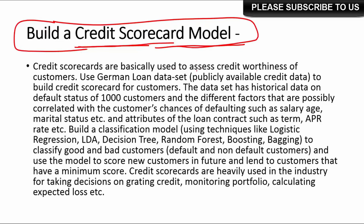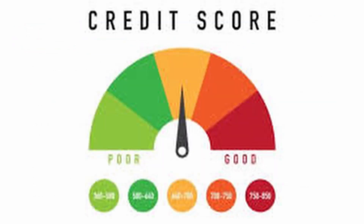Credit scorecards are basically used to assess the creditworthiness of customers. Banks and financial services companies use them to find out who could be a good or bad customer, and based on that they grant loans — only to potentially good customers. They also use them for pricing; customers likely to default are priced at a much higher rate. A number of classification techniques are used, such as logistic regression, linear discriminant analysis, decision trees, random forest, boosting, bagging, SVM, and neural networks, to classify good and bad customers.